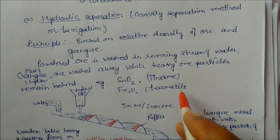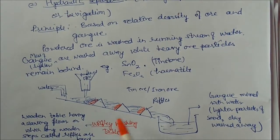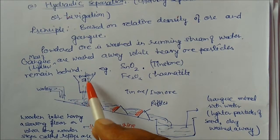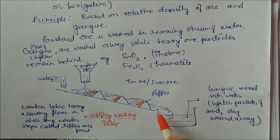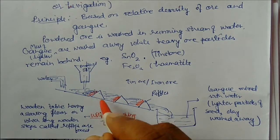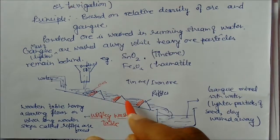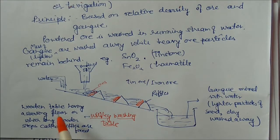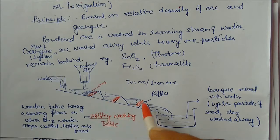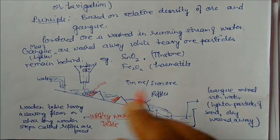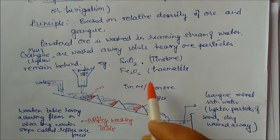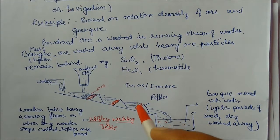In the diagram of hydraulic washing, you can see a hopper in which powdered ore is placed and water flows from one side along a sloping part. The wooden table has a slanting floor with wooden steps called riffles or bumps. Ores are blocked by these riffles while water flows down carrying gangue particles — sand, clay — which are washed away and collected. This method is normally used for tin stone, iron ores, and other ores.